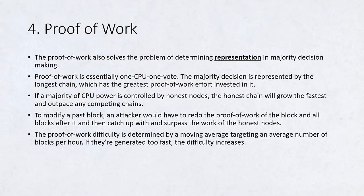To compensate for increasing hardware speed and varying interest in running nodes over time, the proof-of-work difficulty is determined by a moving average targeting an average number of blocks per hour. If they're generated too fast, the difficulty increases.